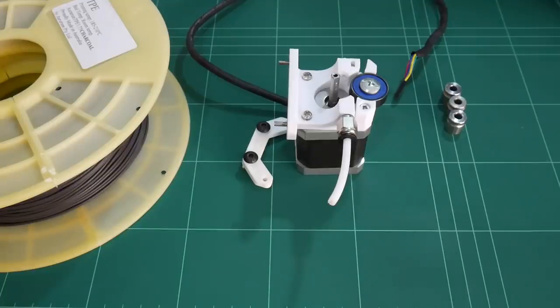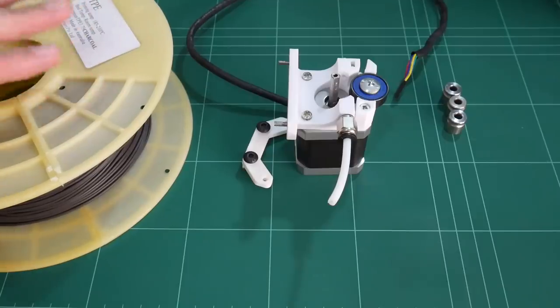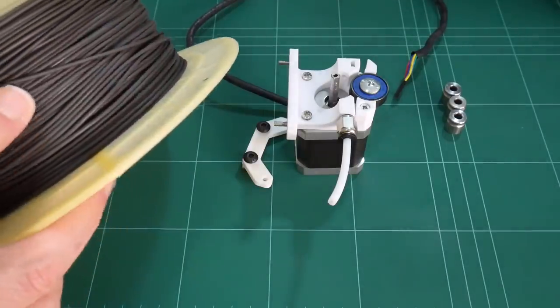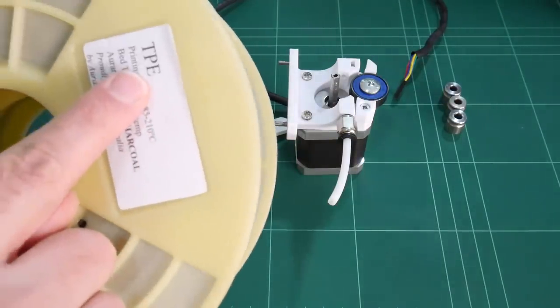PETG, ABS, etc., one of the downsides is printing soft elastic filaments, such as TPE.